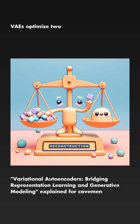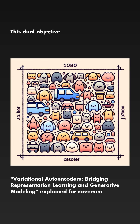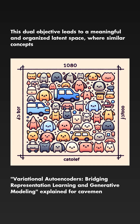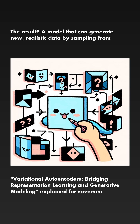VAEs optimize two objectives: minimizing reconstruction error and making the latent space resemble a standard normal distribution. This dual objective leads to a meaningful and organized latent space where similar concepts cluster together. The result is a model that can generate new, realistic data by sampling from this well-structured latent space.